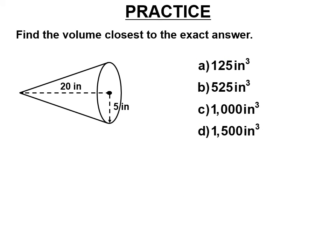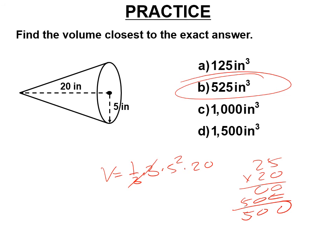The volume closest to the answer. That means I want you to use 3 for pi. r is 5 and height is 20. These 3s cancel. We're doing 25 times 20. 25 times 2 is 50. So 25 times 20 must be 500. Which one is the closest but a little bit bigger? 525 cubic inches.